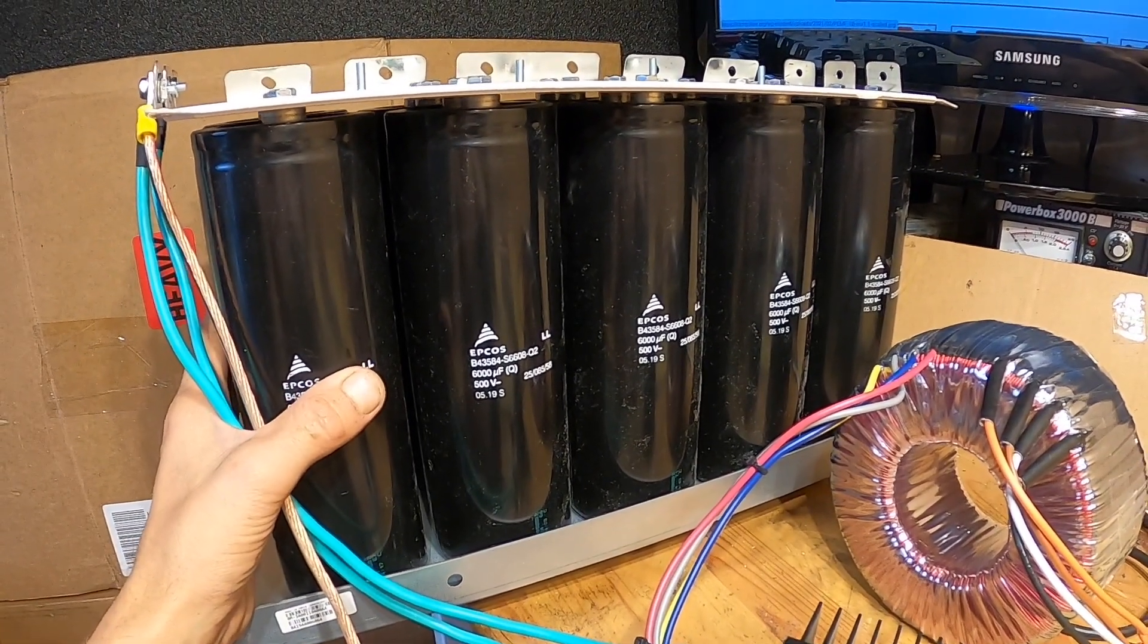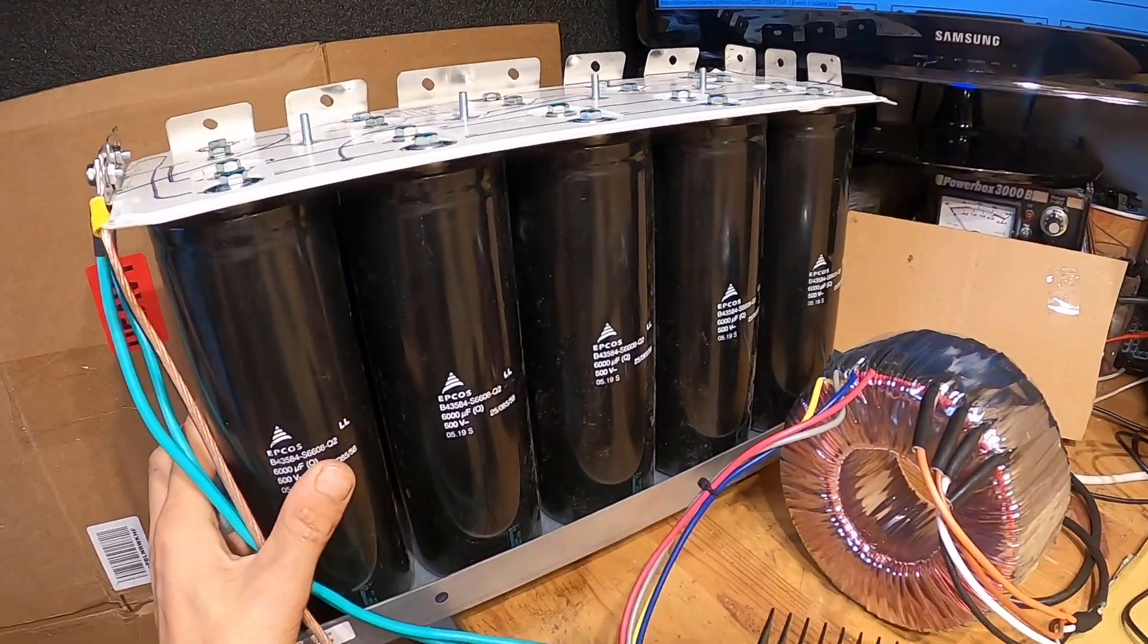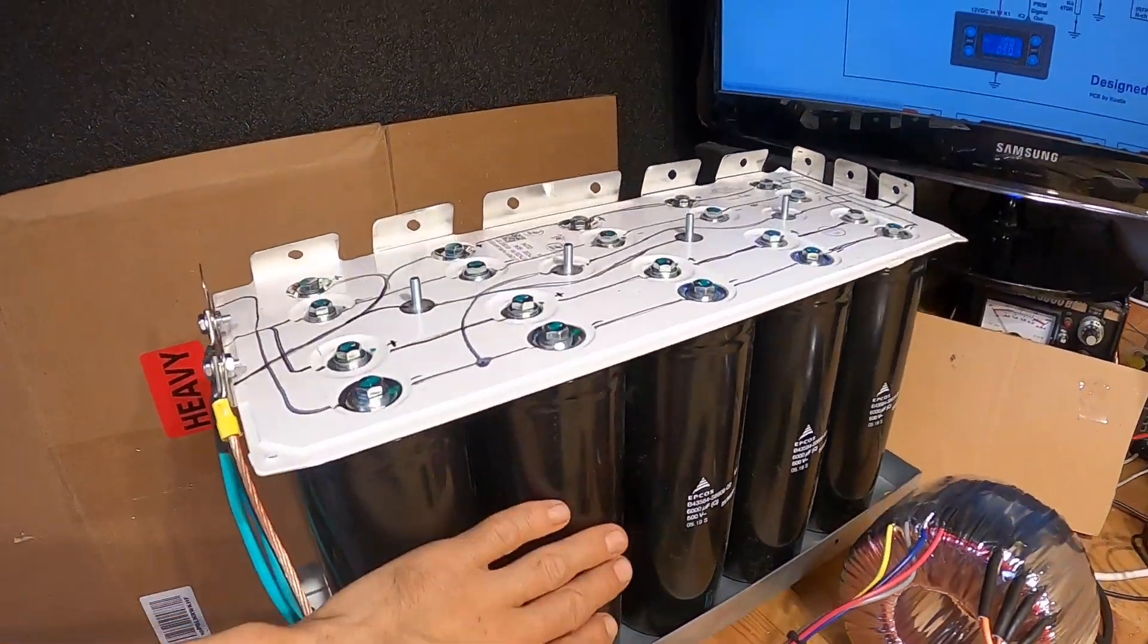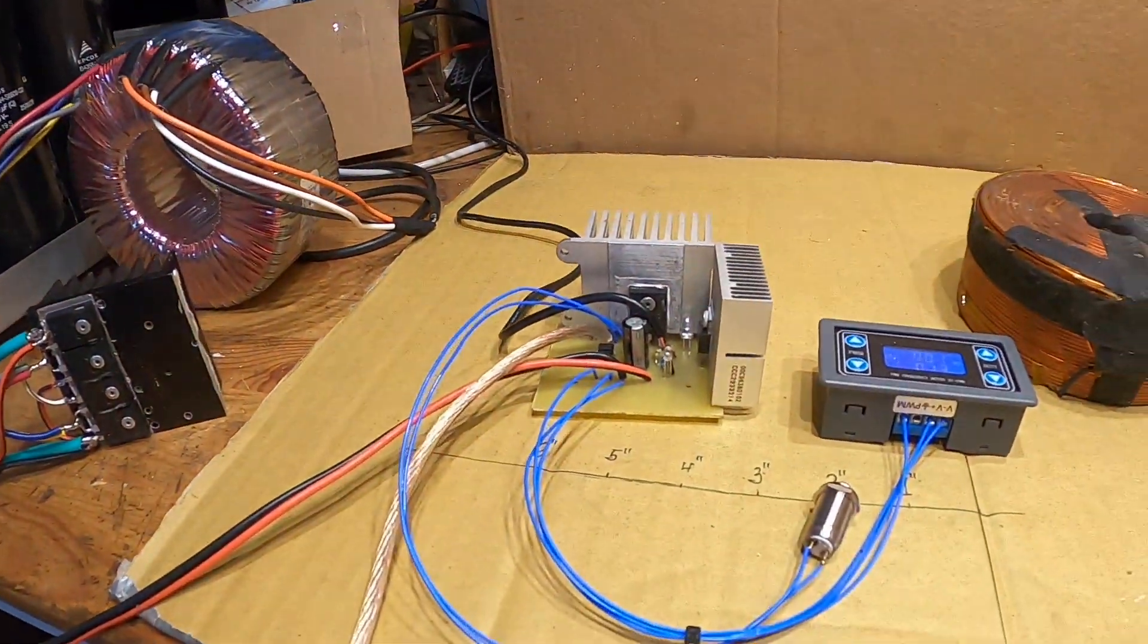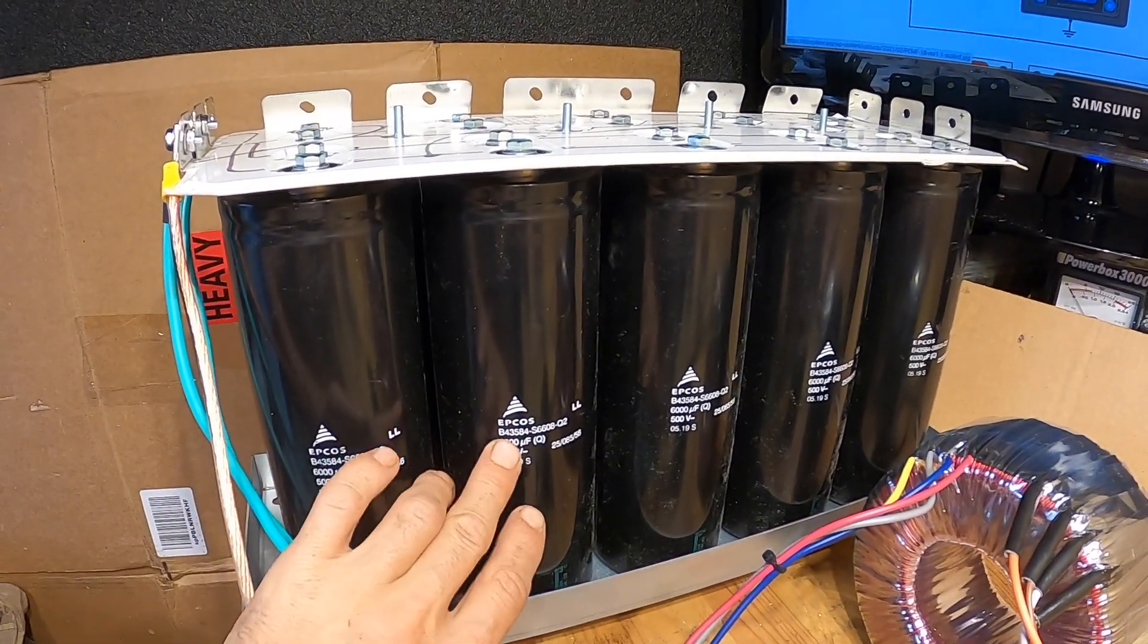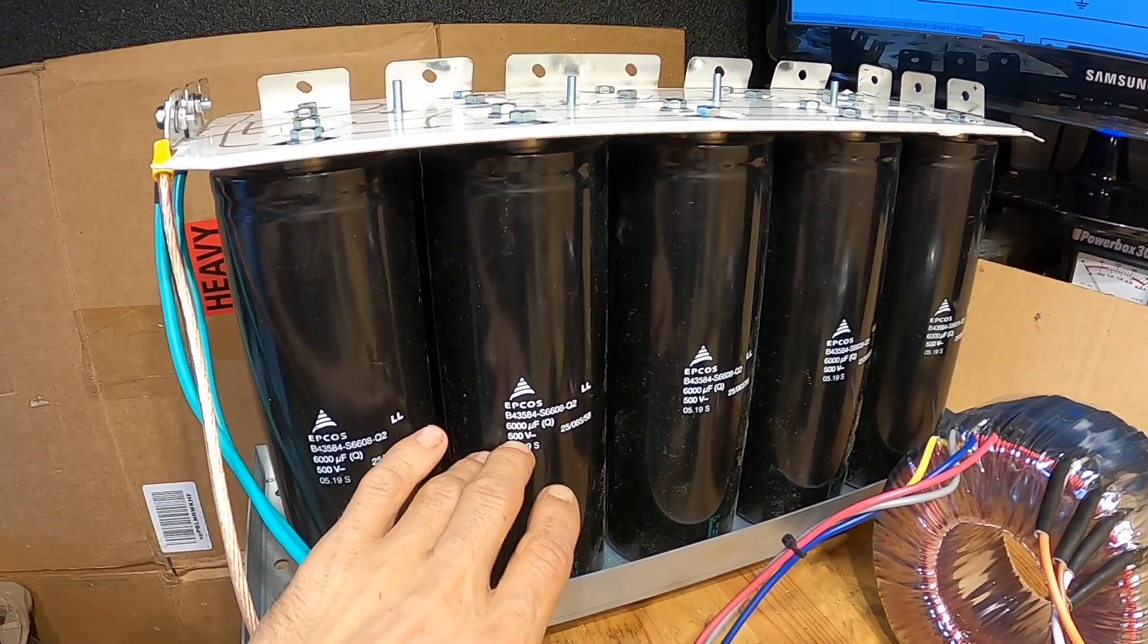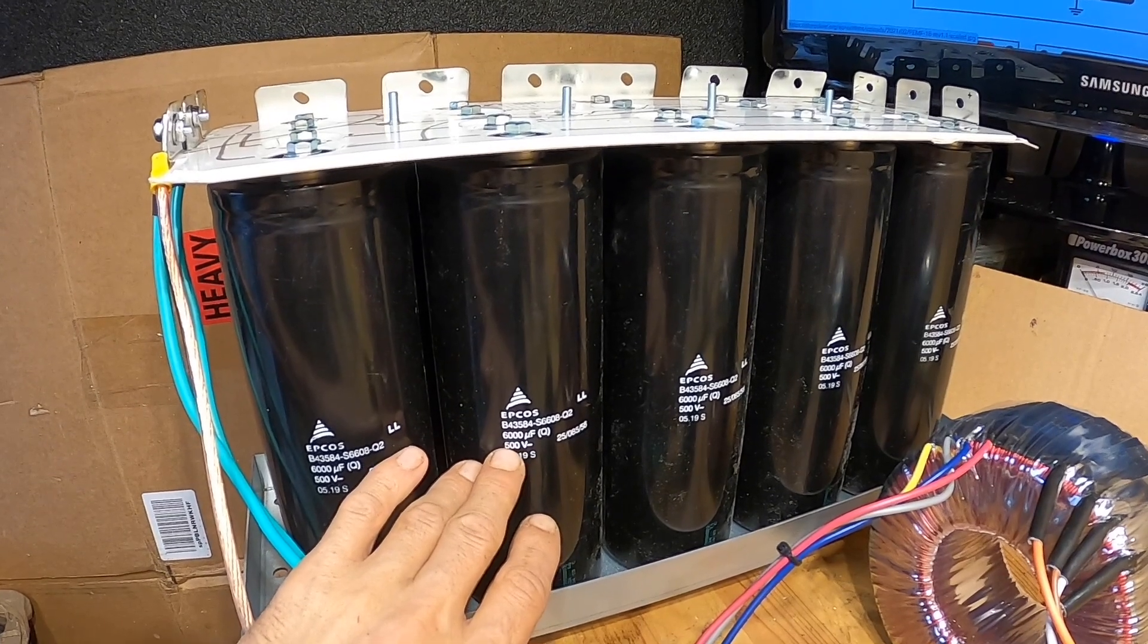And it's a big capacitor bank here. It's not designed for this pulser but I am gonna use 5 capacitors, half of this capacitor bank for this circuit here. Half of the capacitor bank will end up to be 30,000 microfarad. Each one is 6,000 microfarad 500 volt, but in this circuit we're only going to be charging them to about 150 volt.